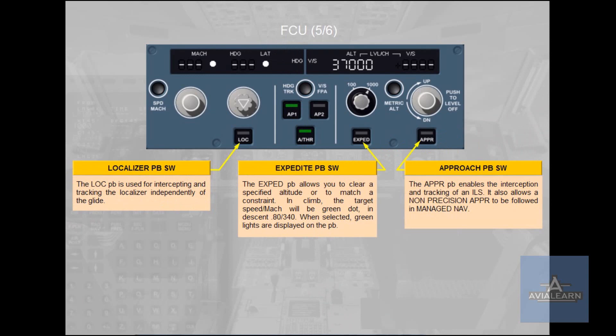The Expedite Push Button Switch allows you to clear a specified altitude or to match a constraint in climb. The target speed will be green dot in descent. When selected, green lights are displayed on the push button.